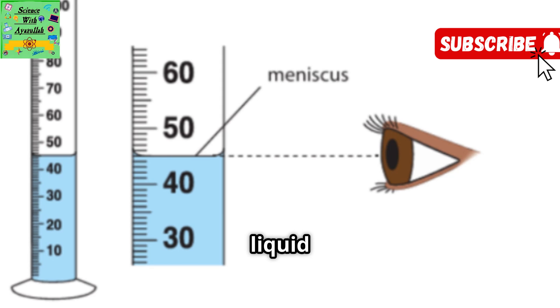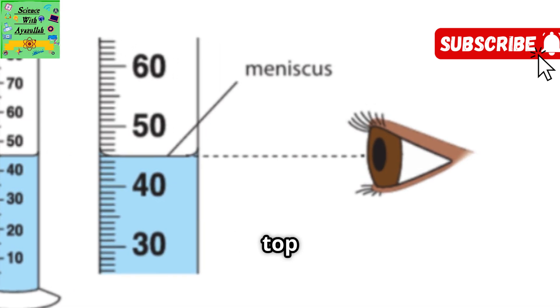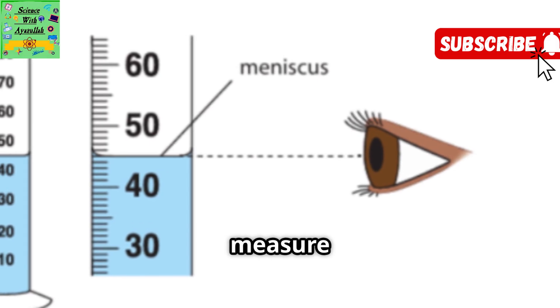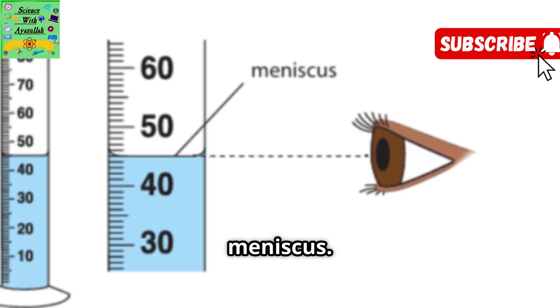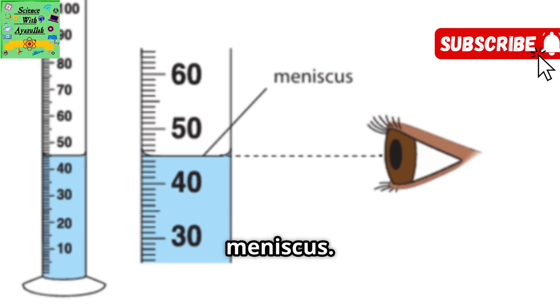When you measure the volume of a liquid, you use a measuring cylinder. The liquid forms a curve at the top called the meniscus. You measure the volume from the bottom of the meniscus. To do this, you must make sure that your eye is level with the meniscus.